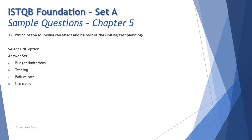Moving into the next question, number 32: which of the following can affect and be a part of initial test planning? This question comes from the planning process, testing your understanding of test planning activities. Planning overall is about laying out the overall plan and defining the goals and objectives of the entire test process.